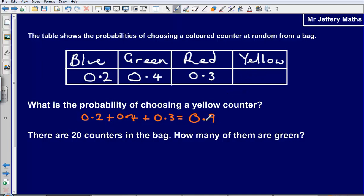So what do we need to add on to 0.9? To make it up to 1 we need to add on 0.1. So our answer to the first part would be 0.1.